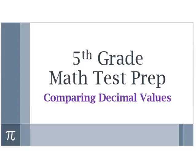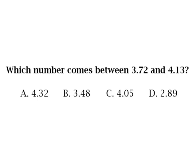Greetings, this is Shea Jackson with Hype Math. In today's fifth grade math test prep video we will be discussing comparing decimal values. Let's get started. Our first problem states which number comes between 3.72 and 4.13, or we can say which number comes between 3 and 72 hundredths and 4 and 13 hundredths.